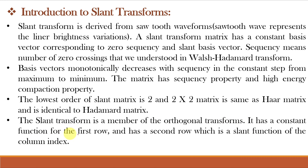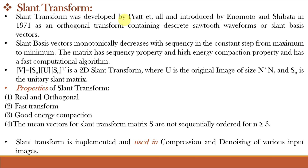The slant matrix has a constant function for the first row, and the second row is a slant function of the column index. So the first row of the slant matrix always has a constant function such as 1, 1, 1, 1, and so on. The slant transform was developed by Pratt and other developers and was introduced by Enomoto and Shibata in 1971 as an orthogonal transform containing discrete sawtooth waveforms or slant basis vectors. The slant transform has high energy compaction property and its algorithm is computationally very fast.